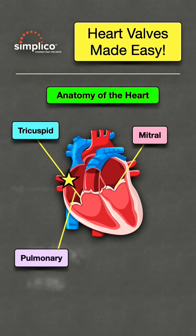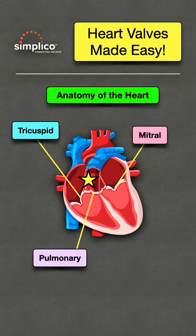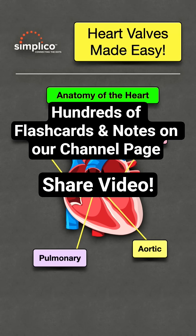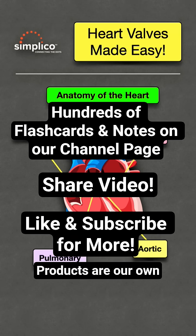The aortic and pulmonary valves are easy. The pulmonary valve is by the main pulmonary artery, and the aortic valve is by the aorta.